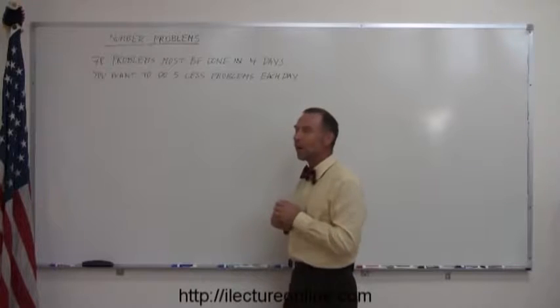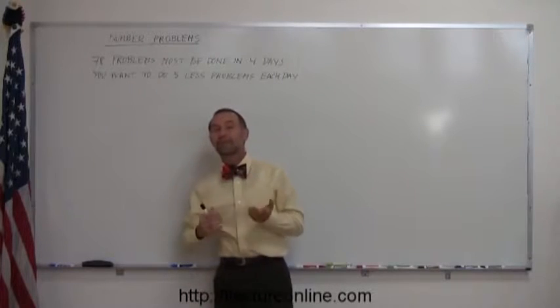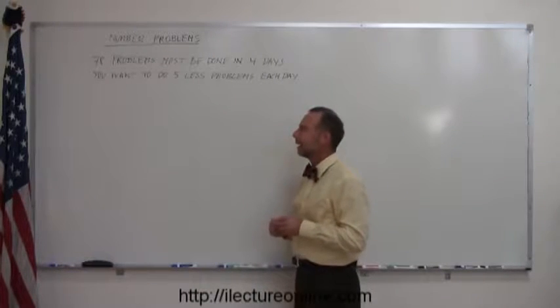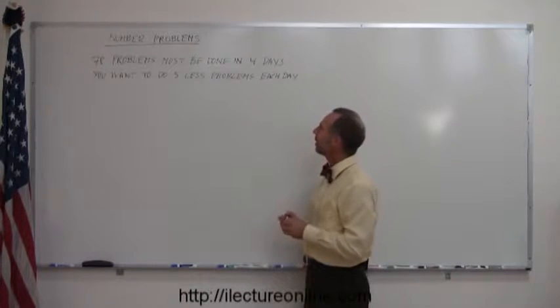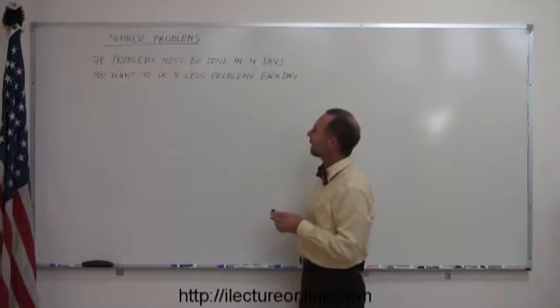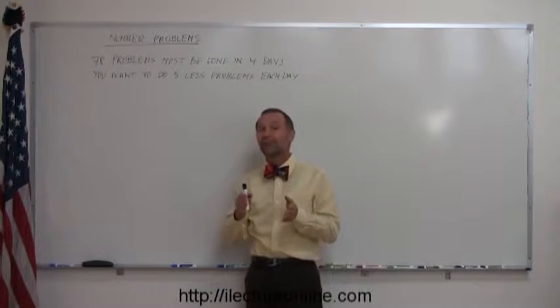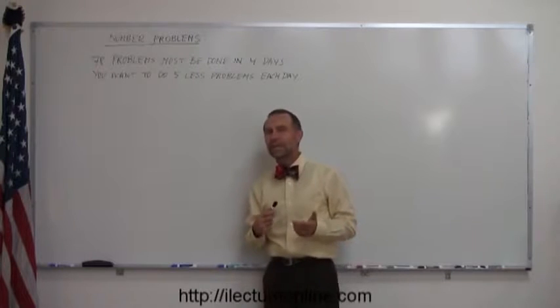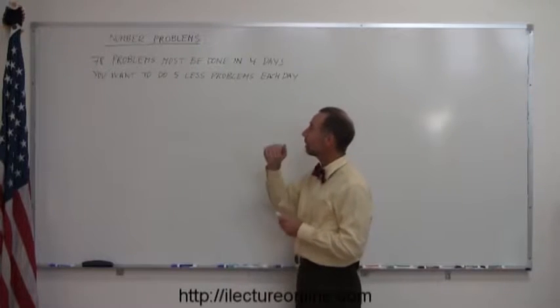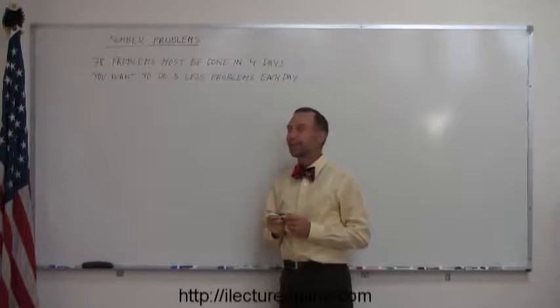For example, let's say you want to do 78 problems and you have 4 days to do it in. And you want to do more in front, more in the first day and less later. So let's say that the restrictions are that each day you want to do 5 less problems than you did the day before. So how many problems should you do each day? So we have a total of 78 problems and you want to do 5 less each day.